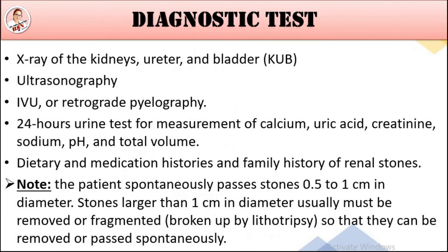Diagnostic tests mein: X-ray karvaye jaate hain — kidney, ureters, bladder — jise KUB X-ray bola jata hai. IVP bhi karvate hain — intravenous pyelography. Ultrasound karvaya jata hai, IVU karvaya jata hai, retrograde pyelography — jis mein vein ke zariye ek dye inject ki jati hai jis ke baad pata chalta hai ke kahan pe problem hai.